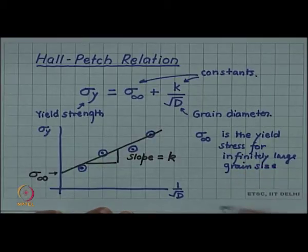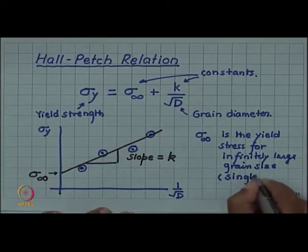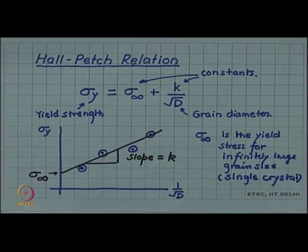So you can assume it to be a single crystal because there are no grain boundaries. So sigma infinity can be thought of as some sort of yield stress, average yield stress of a single crystal.